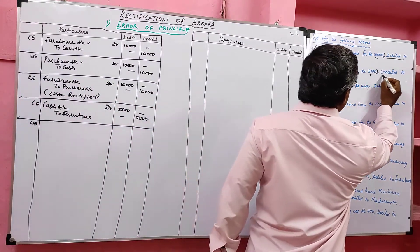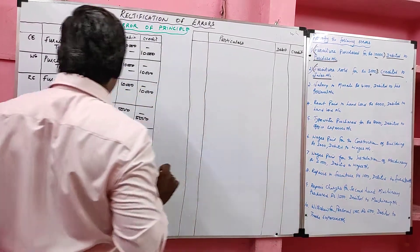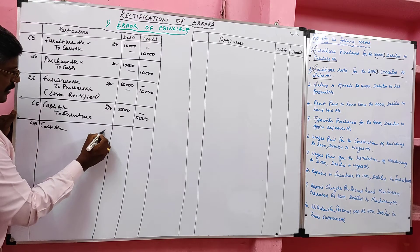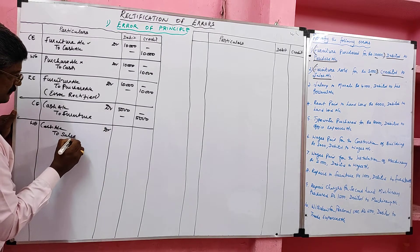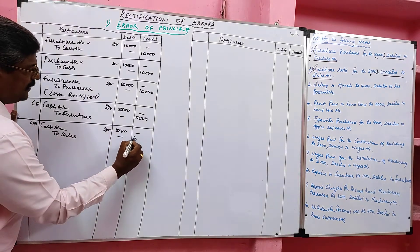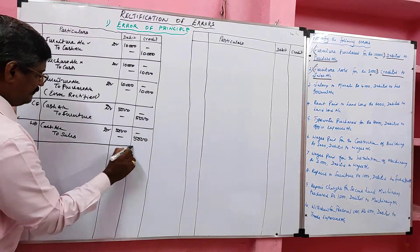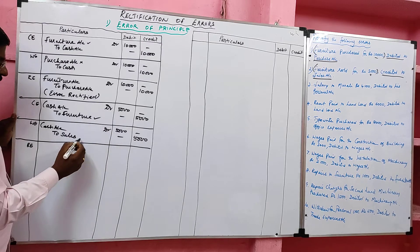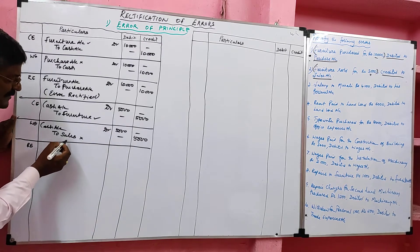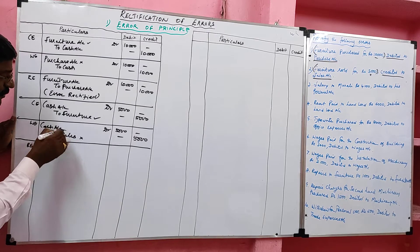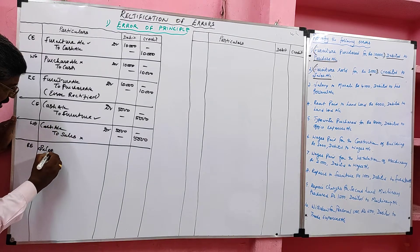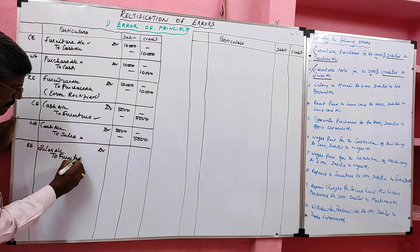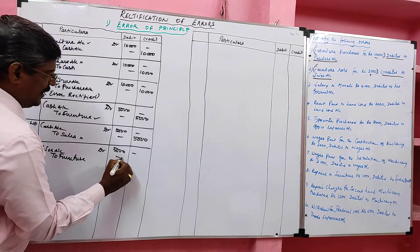For furniture sold for 5,000, credit was given to sales account instead of furniture. So the wrong entry was: cash account debit to sales account, value 5,000. The error is on the credit side. Rectified entry: sales account debit to furniture account, value 5,000. Narration: error rectified. Sales was on the credit side, so to cancel it, it goes to the debit side.